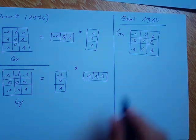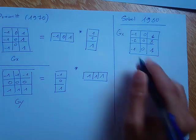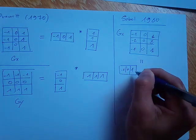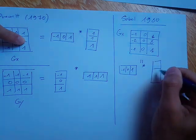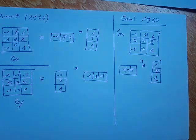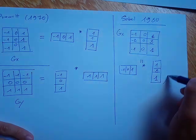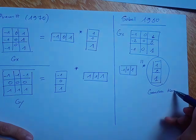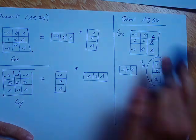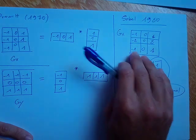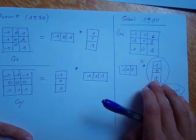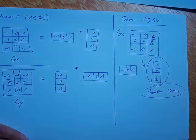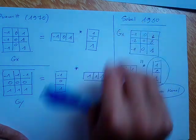The Sobel gx kernel can be decomposed as a one-dimensional derivative kernel in the x direction convolved with a smoothing kernel of 1, 2, 1. This smoothing kernel is a Gaussian kernel, and that is why Sobel has a better ability to deal with noise than Prewitt — its smoothing kernel is more effective.